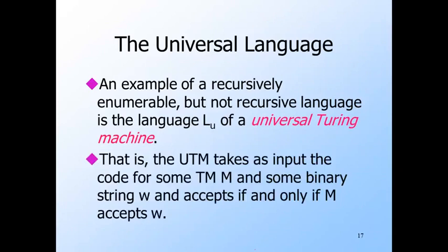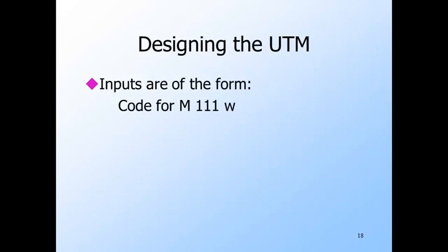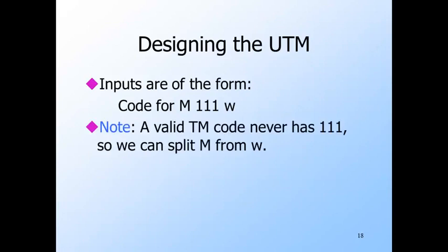The universal Turing machine takes as input a binary string consisting of the code for some Turing machine M and some input W for M. The universal Turing machine accepts the coded M and W if and only if M accepts W. Inputs to the universal Turing machine are of the form: a code for machine M, then three ones, then the binary string W. Since a valid code for M can never have three consecutive ones, it is never ambiguous what part of the input is M and what part is W. The universal Turing machine accepts its input if and only if that input has a valid code for some Turing machine M and that Turing machine accepts W.